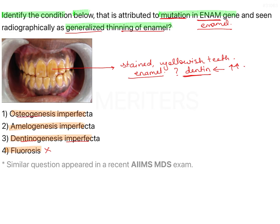Osteogenesis imperfecta can be associated with amelogenesis imperfecta in one form of it, but primarily this is a defect in enamel matrix formation, and that is amelogenesis imperfecta.